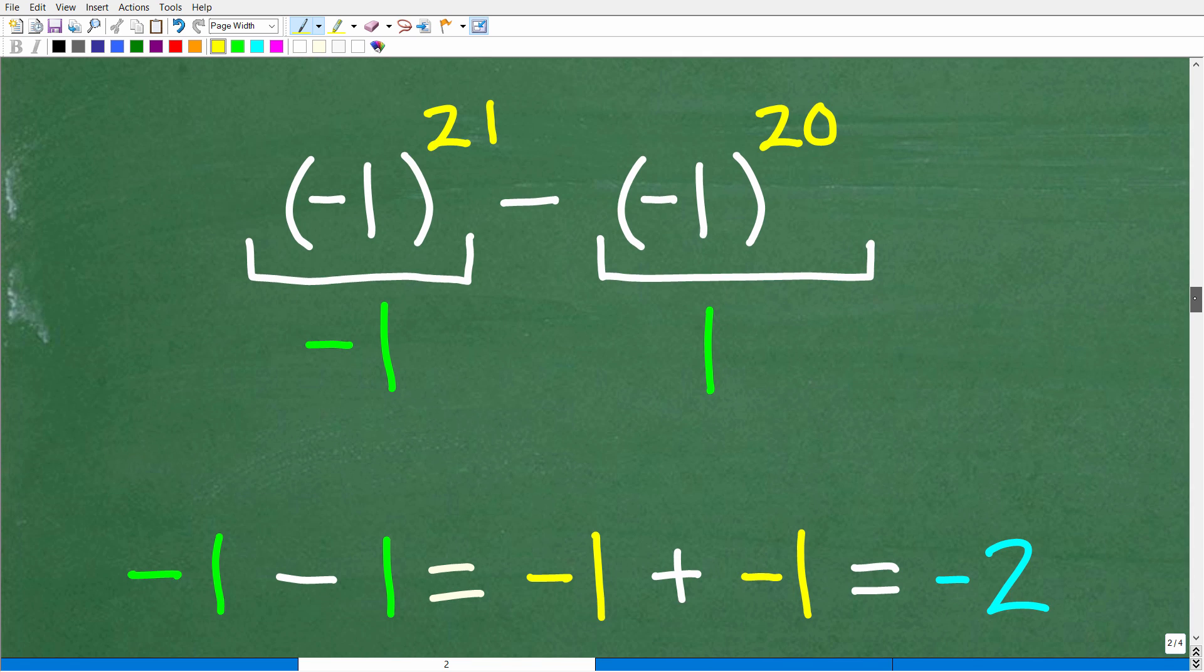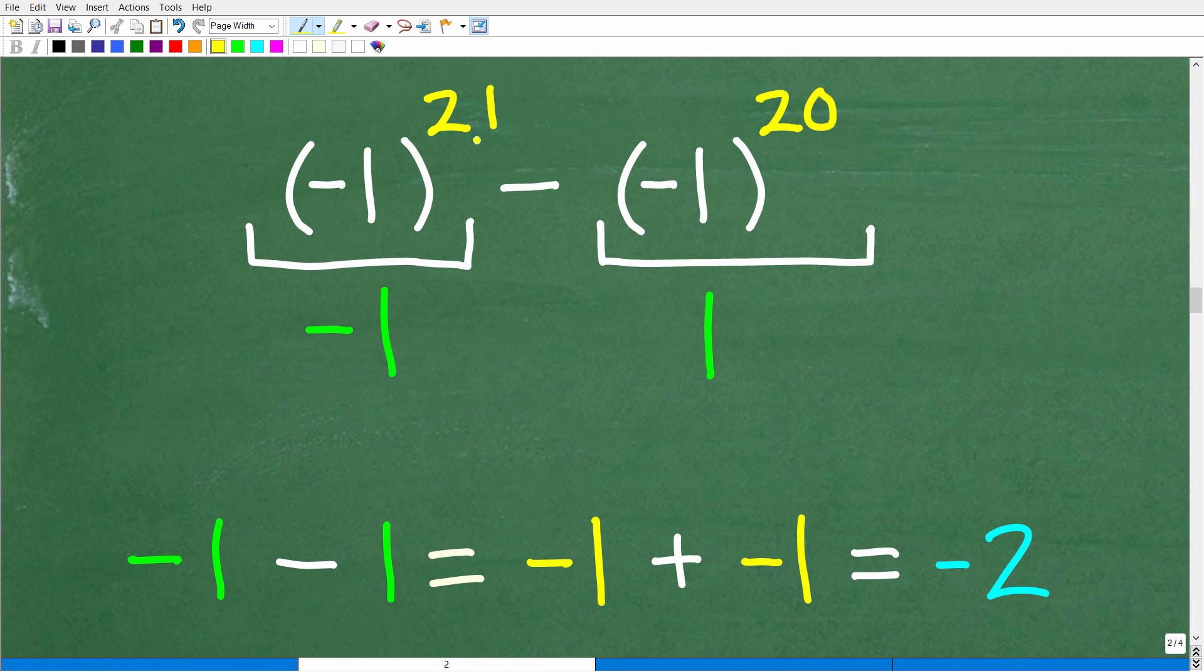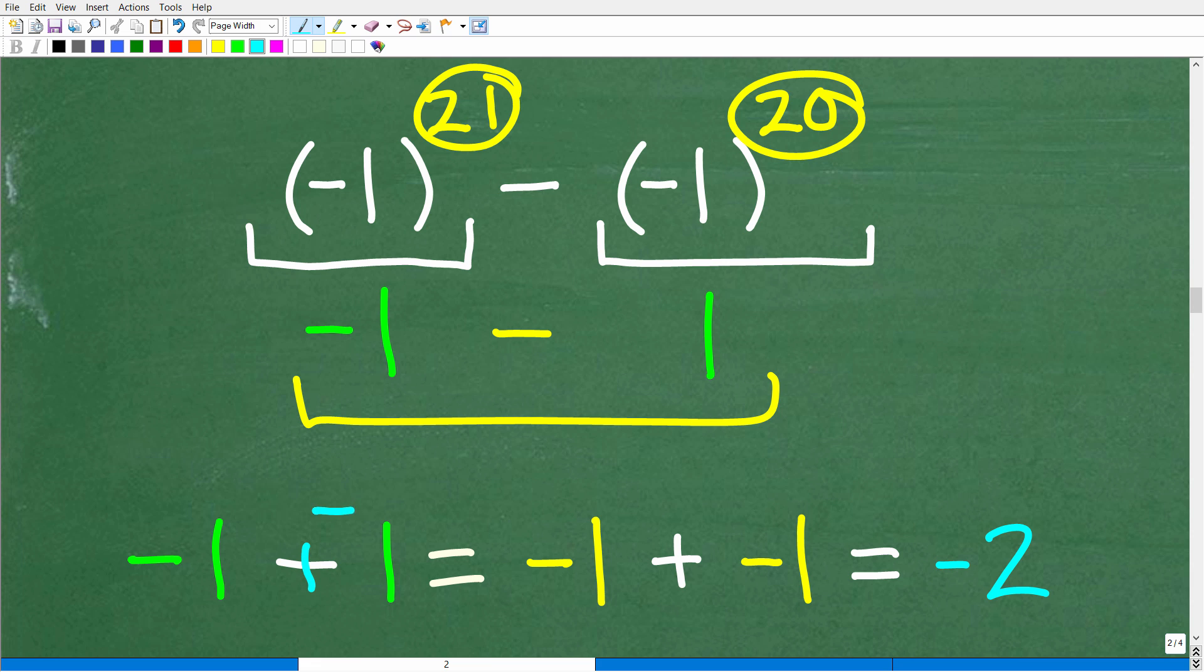All right. So let's go and finish this problem up. This is super easy now. So we have negative one to an odd power. That's negative one minus this negative one to an even power. That's a positive one. So really, this problem is negative one minus one. So negative one minus one is the same thing as negative one plus a negative one.